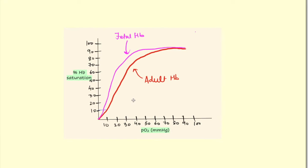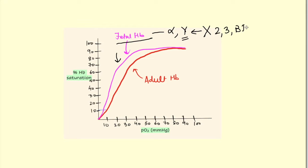Fetal hemoglobin has a left-shifted oxyhemoglobin dissociation curve compared to adult hemoglobin. Fetal hemoglobin contains alpha and gamma chains instead of beta chains. The gamma chains cannot bind 2,3-BPG, which normally causes a right shift. Without this right shift, fetal hemoglobin has higher affinity for oxygen than adult hemoglobin, allowing it to efficiently extract oxygen from maternal blood.